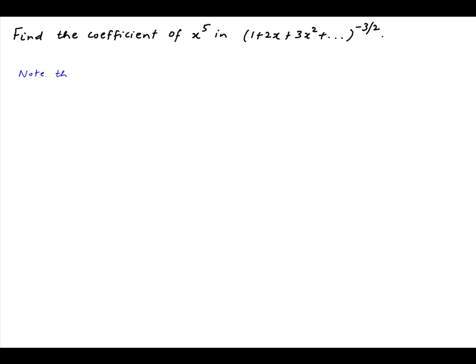We first note that the binomial expansion of 1 minus x raised to the power minus 2 is equal to 1 plus 2x plus 3x square plus and so on.